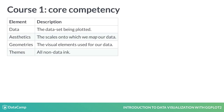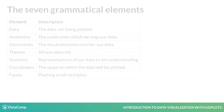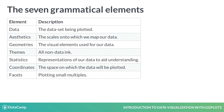The rest are optional layers. This includes the theme layer, which controls all of the non-data ink. In this course, we'll cover these first four layers, which will comprise your core competency. In the next course, we'll explore the remaining grammatical elements: the statistics, coordinates, and facets layers.